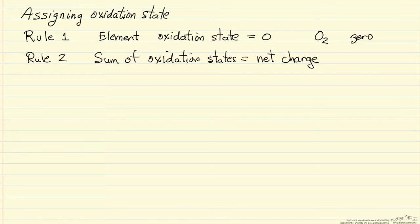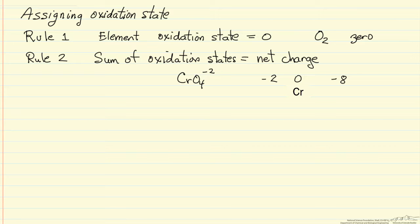The second rule says that for any molecule or ion, the sum of the oxidation states must equal the net charge on that molecule or ion. For example, look at this chromium compound — this particular ion has 4 oxygens bound to chromium and a net charge of minus 2. If each oxygen has an oxidation state of minus 2, that's 4 oxygens giving minus 8. So chromium must be plus 6 in order for the charges to sum to minus 2.